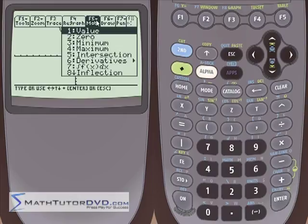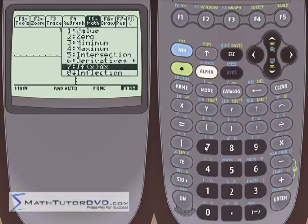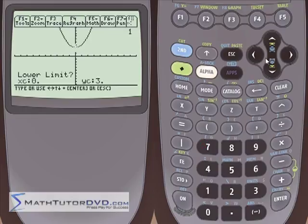So we go into the math menu here, F5, and we just did derivative. So just under that is integral f of x dx. That's what this symbology means. So we go to number 7, and it's asking me for a lower limit.